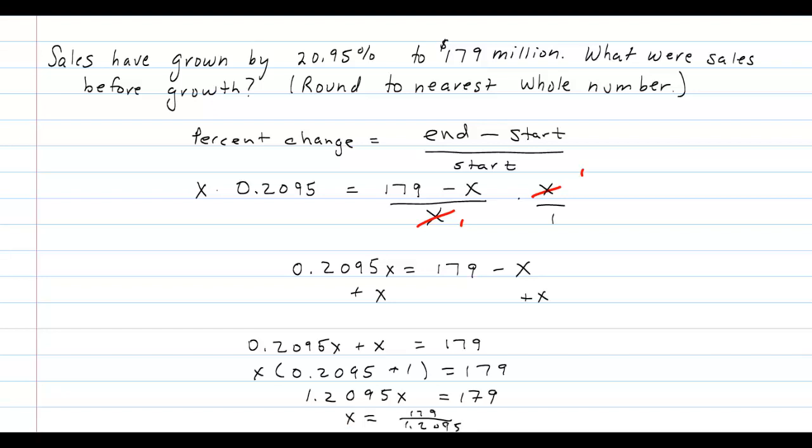I get that x is equal to 147.995 or rounded to the nearest whole number, this is simply 148 million dollars.